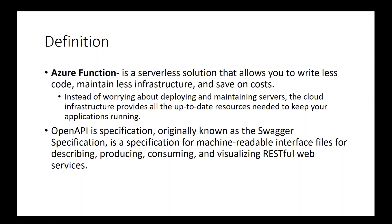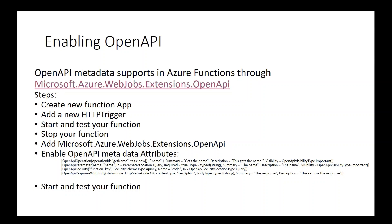Azure Function is defined like that. When we come to OpenAPI, this is a specification — originally known as Swagger — for machine-readable interface files that describe, produce, consume, and visualize RESTful web services. The question is: when we are writing an Azure Function, it is not within OpenAPI specification standards. How can we enable that standard? There are steps I will explain.